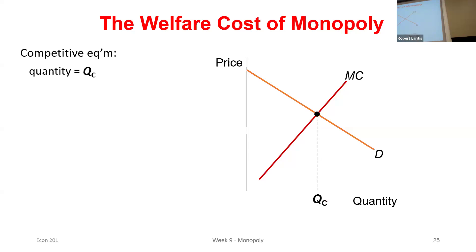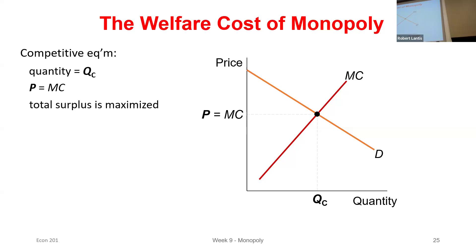So we talked about last class: if we had a perfectly competitive market with one supplier, their marginal cost would be all of market supply. The equilibrium price and quantity is simply where supply — if we only have one firm, their marginal cost is market supply — is equal to demand. So here's my perfectly competitive quantity and price. At the long-run equilibrium for a perfectly competitive firm, price equals marginal cost, equals marginal revenue, equals the minimum point of our long-run average total cost.